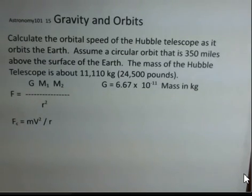As it goes in orbit around the Earth, I'm going to assume a circular orbit. It's not circular, but let's assume it is circular. And it's 350 miles on average above the surface of the Earth.